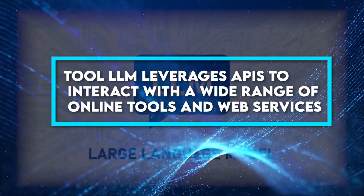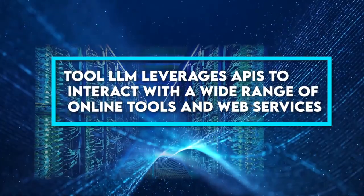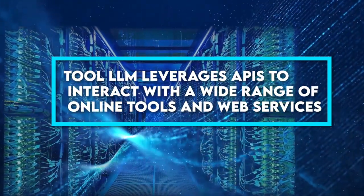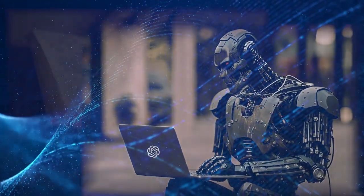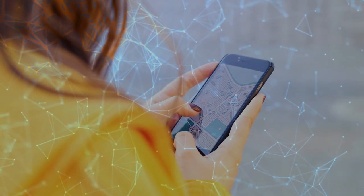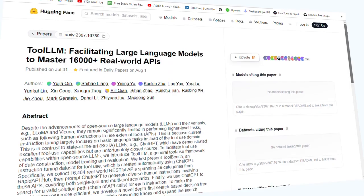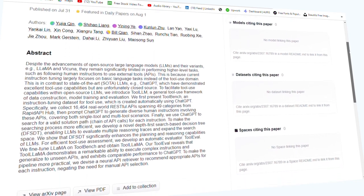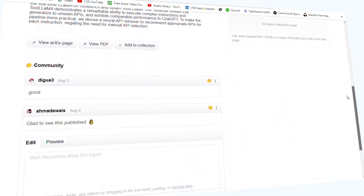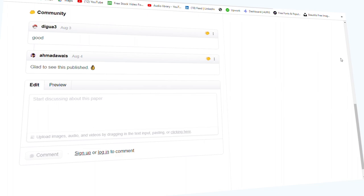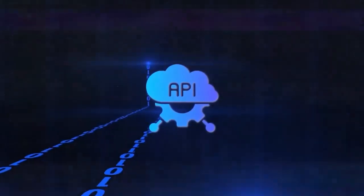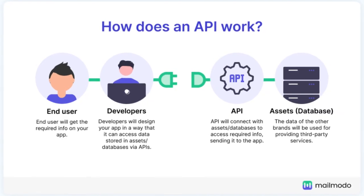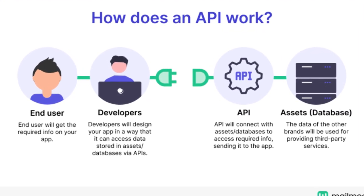Tool LLM leverages APIs to interact with a wide range of online tools and web services. That means Tool LLM can help you book a ride on a cab-hailing app, find the nearest restaurant on Google Maps, and select a workout playlist on Spotify. For Tool LLM to establish API connections and successfully carry instructions out, it must perform the following tasks: interpret your instruction, identify the appropriate API for completing a command, find the correct API call, and execute the instructions.